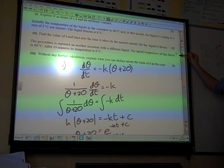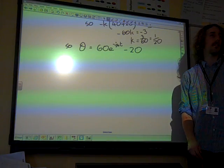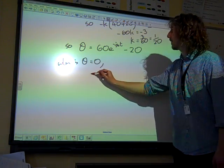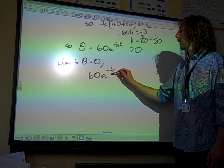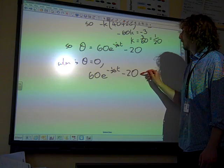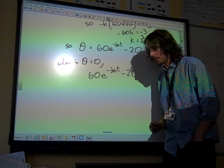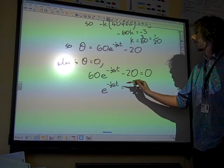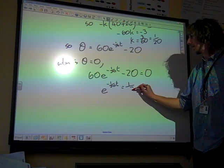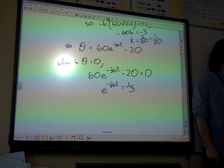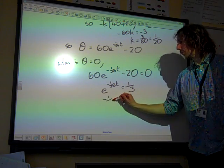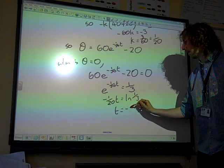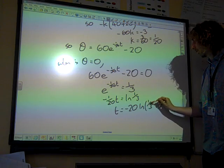The value we can find also is the time it takes for the liquid to freeze. So we now want to know when is θ equal to 0. That means that 60e^(-1/20 t) - 20 is going to be 0. Rearrange that to get e^(-1/20 t) equals, 20 over and divide by the 60, we've got 1/3.